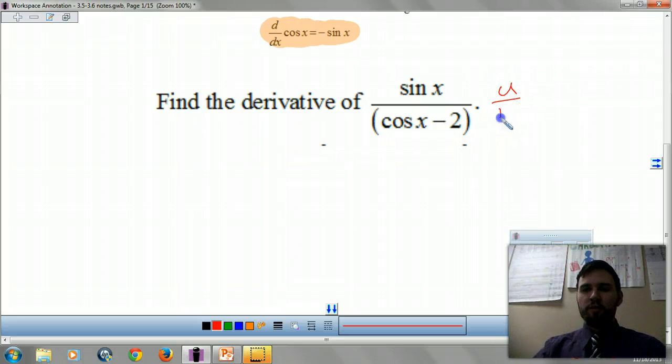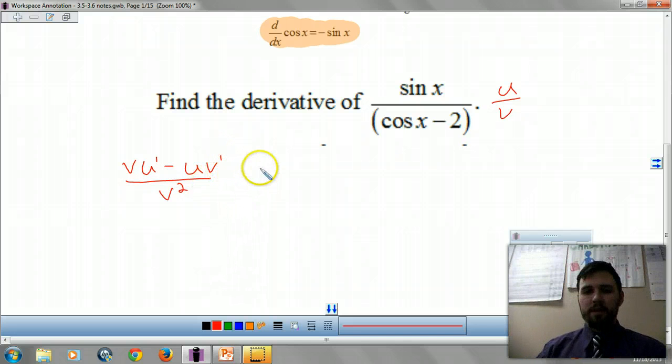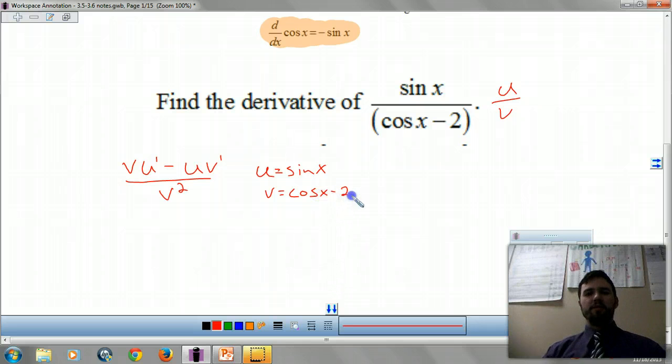Find the derivative of this beast. We have a U over a V, so we have to use our quotient rule. Quick review, our quotient rule says our bottom times derivative of the top, minus our top times the derivative of the bottom, all over the bottom squared. Our U is sine of X. Our V is cosine of X minus 2. So our U prime, our derivative of sine is cosine, and our derivative of cosine is negative sine, and then the 2 just goes bye-bye, as my daughter would say.